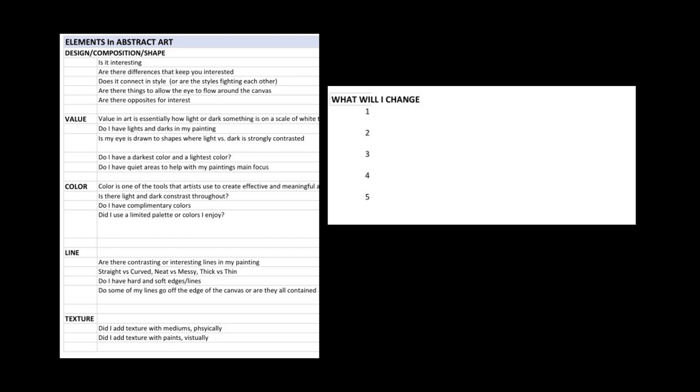There are different things that we look for in the abstracts, and what helps me especially when I get stuck or I'm just trying to figure out what's wrong with the painting I've painted — I go back and look at this form. The goal is to get some of this into your memory so it automatically happens while you're working. You start to think about design, composition, shapes, and value, which is so critical, and then color and line.